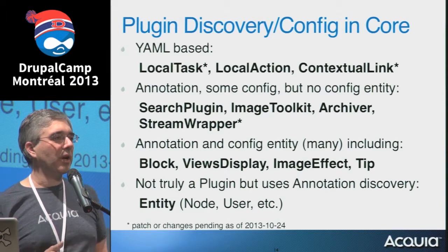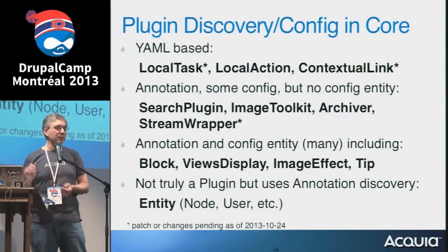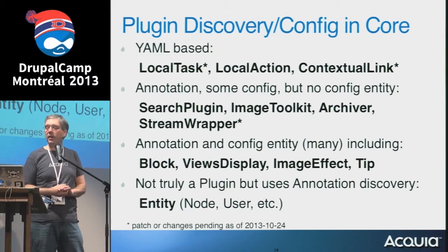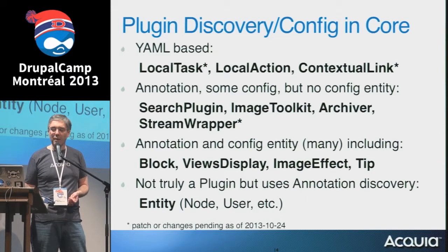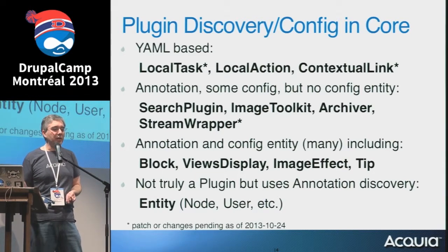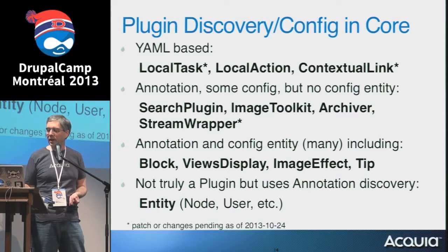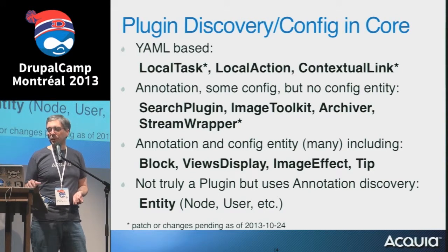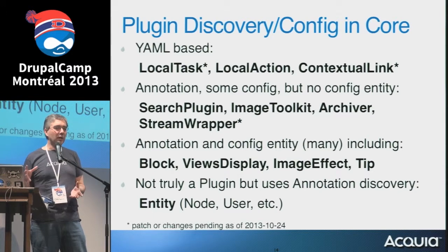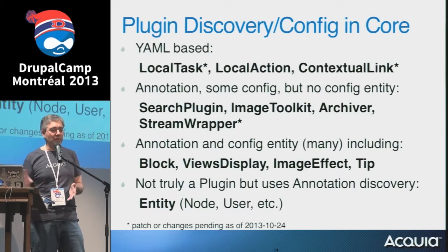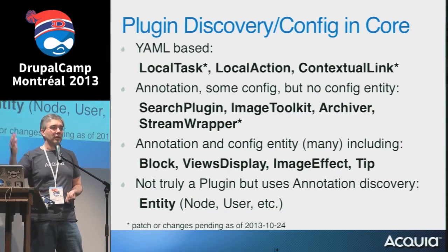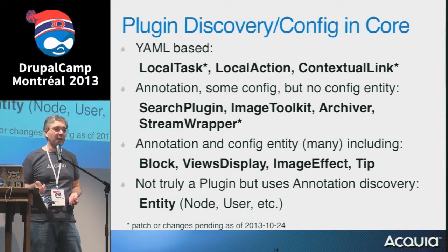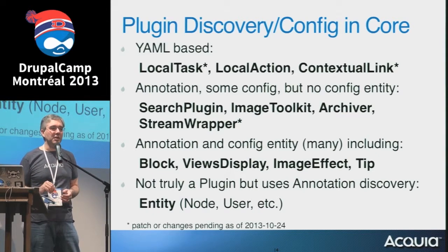Annotation-discovered plugins don't necessarily have a consistent framework for configuring them — some plugin instances may have configuration values, some not. A comparison: node search has some configuration (you might weight different factors), while user search is very simple with no configuration. The most common case in Drupal core is annotation coupled with a config entity. Entities in Drupal 8 are pretty much plugins but not exactly — the entity types have substantial annotation and are discovered using annotation, but the way they're constructed isn't exactly using the plugin system.